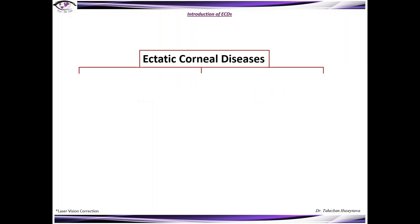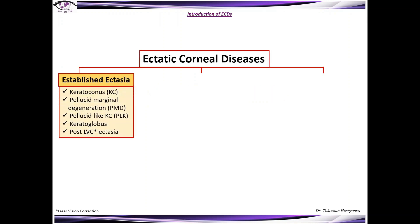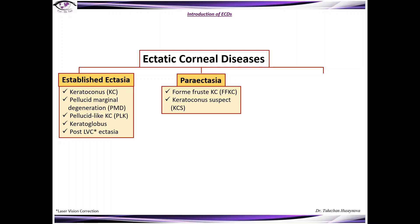Introduction to ectatic corneal diseases. Ectatic corneal diseases have three types. First, established ectasia, which includes keratoconus, pellucid marginal degeneration or PMD, pellucid-like keratoconus, keratoglobus, and post-LVC (laser vision correction) ectasia. Second, paraectasia, which includes form-fruste keratoconus and keratoconus suspect.